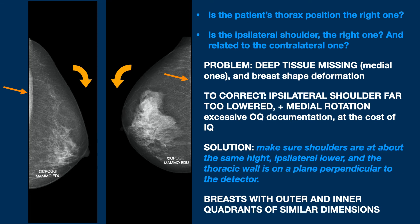In these images, you can see that along with an ipsilateral shoulder too lowered, there is a rotation directed medially, and as a consequence, a loss of deep medial tissue. Worth noting again the position of the pectoralis major in both of them, and so the improper position of the thorax.